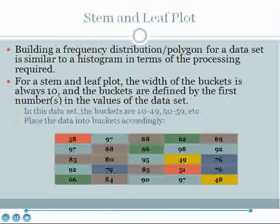Stem and leaf plot. For a stem and leaf plot, the width of the buckets is always 10, and the buckets are defined by the first numbers in the values in the data set.